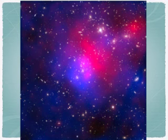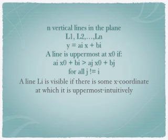You are given n vertical lines in the plane, labeled L1, L2, L3, until Ln, with the ith line specified by the equation y equals ai times x plus bi. We will make the assumption that no three of the lines all meet at a single point.